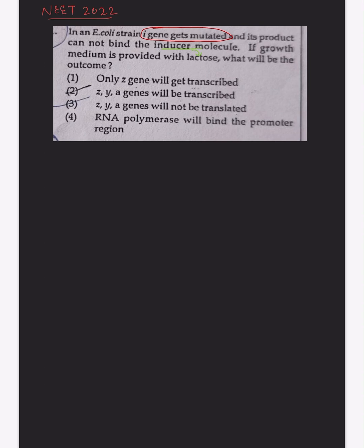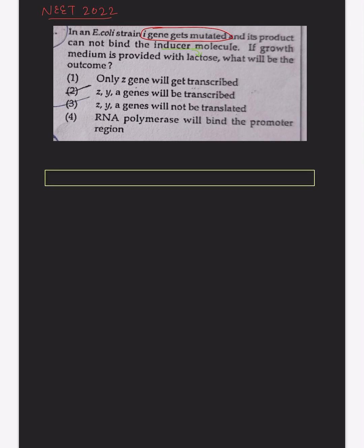If we talk about the lac operon, it somewhat looks like this. It consists of basically the P gene, the I gene, then the P gene, the O gene, and the structural genes namely Z, Y, and A.